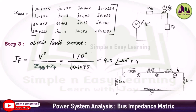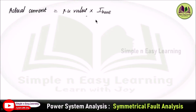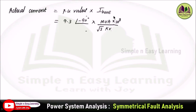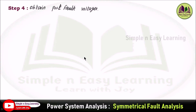To cross-check Z44: at bus 4, the series reactances are j0.15 + j0.09 + j0.05, and this combination is in parallel with j0.15, giving j0.1075 — confirming the value is correct. The actual fault current equals the per-unit value multiplied by the base current. Base current = (MVA × 10³) / (√3 × kV) = (100 × 10³) / (√3 × 20), giving an actual fault current of 26,846.7 amperes.